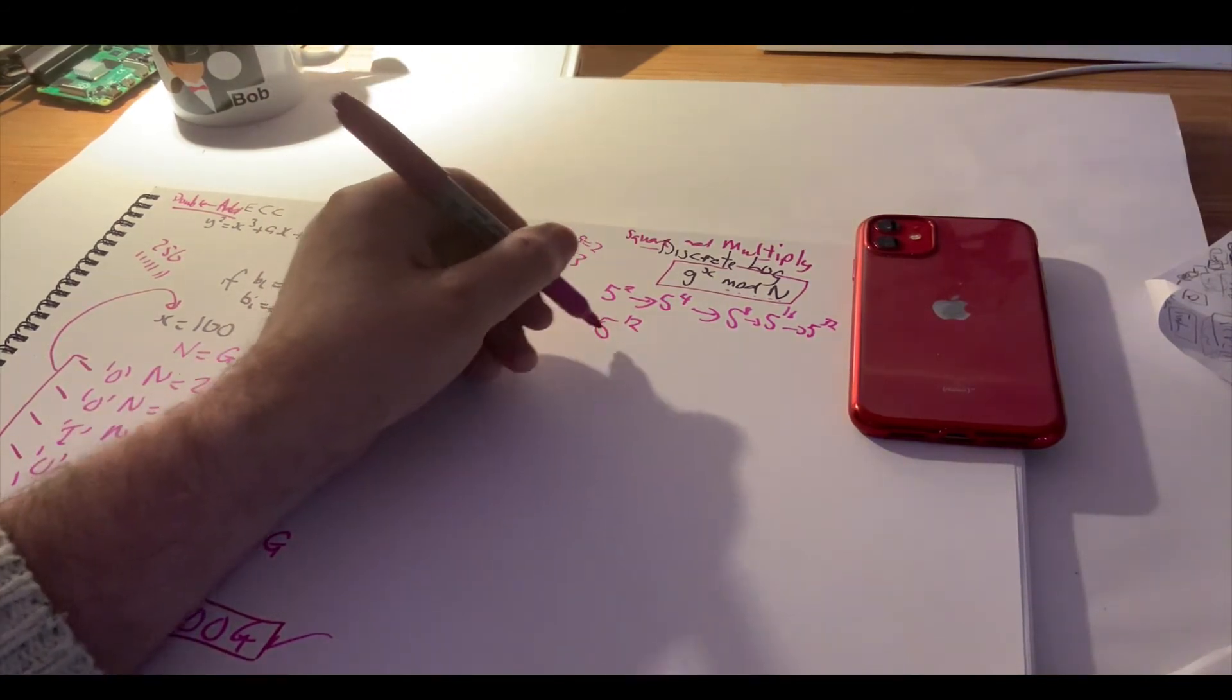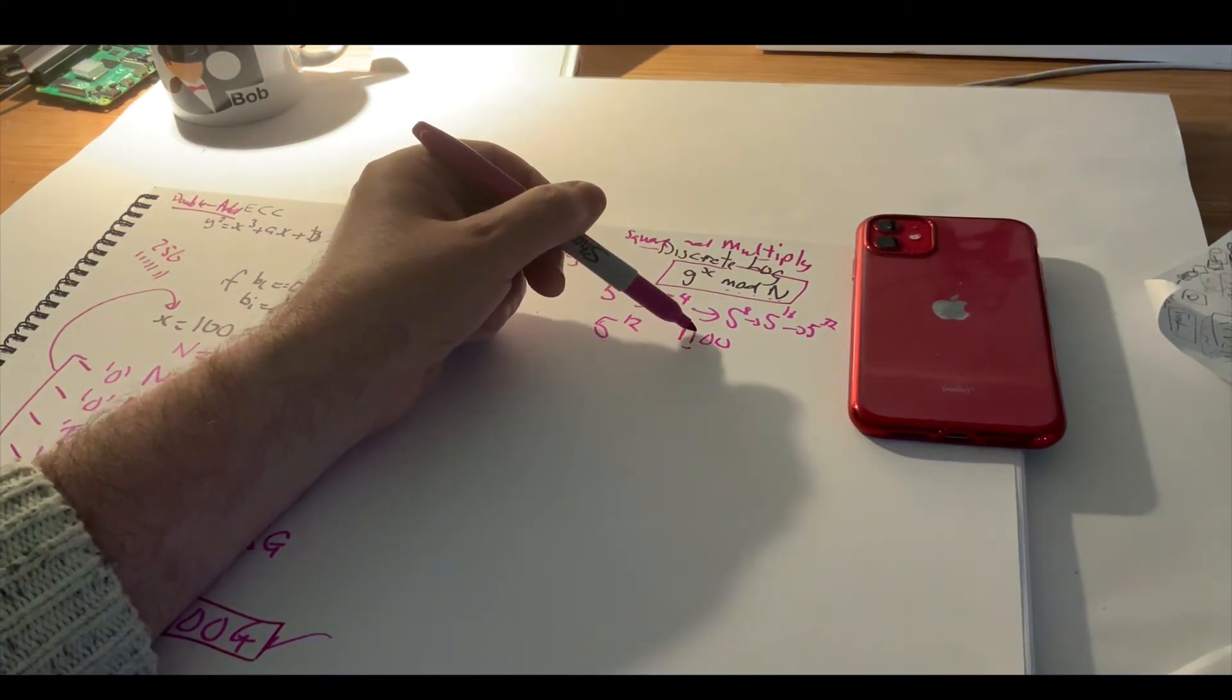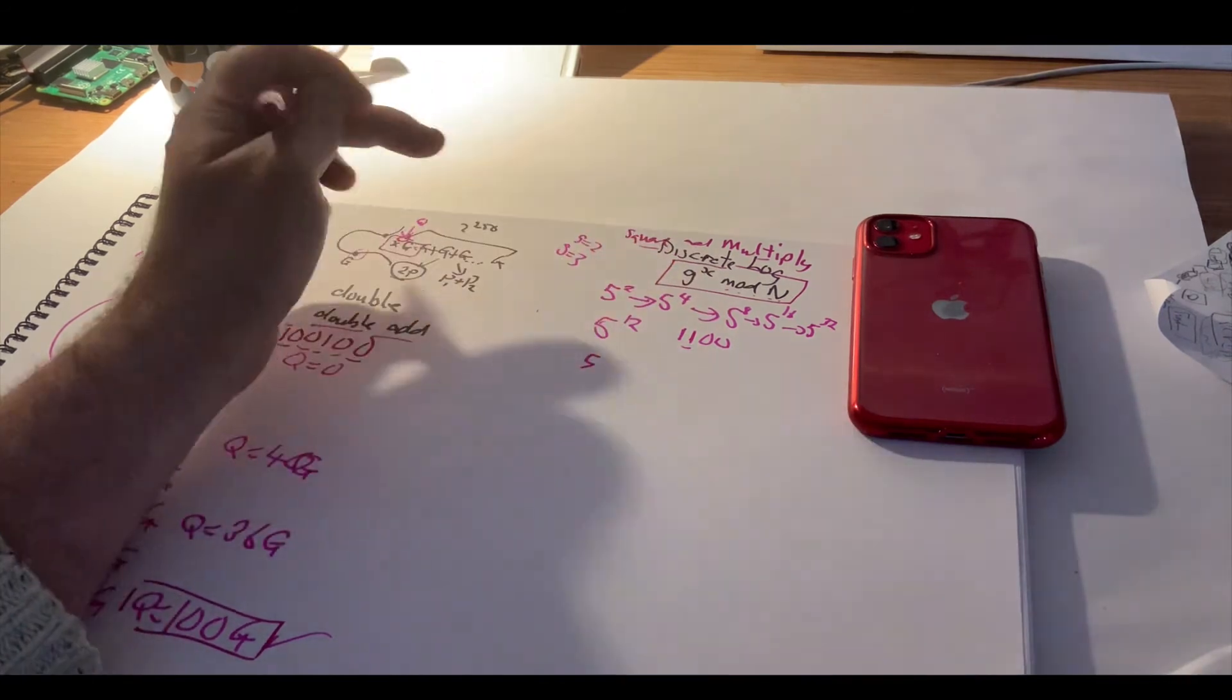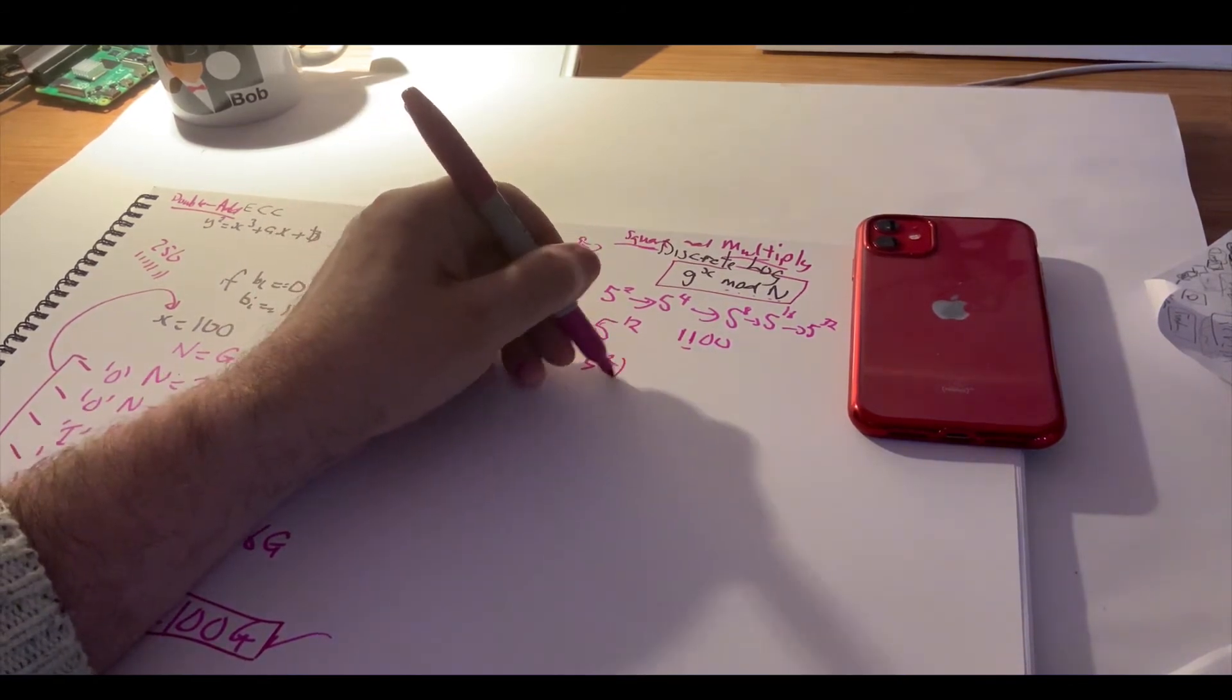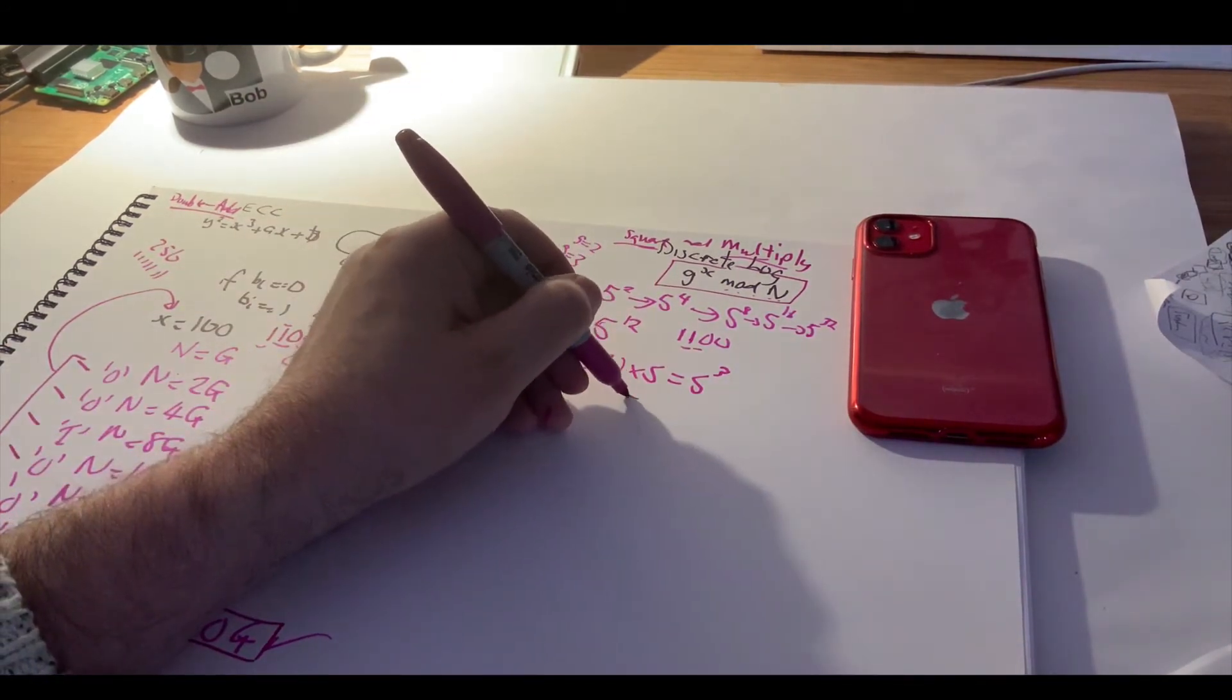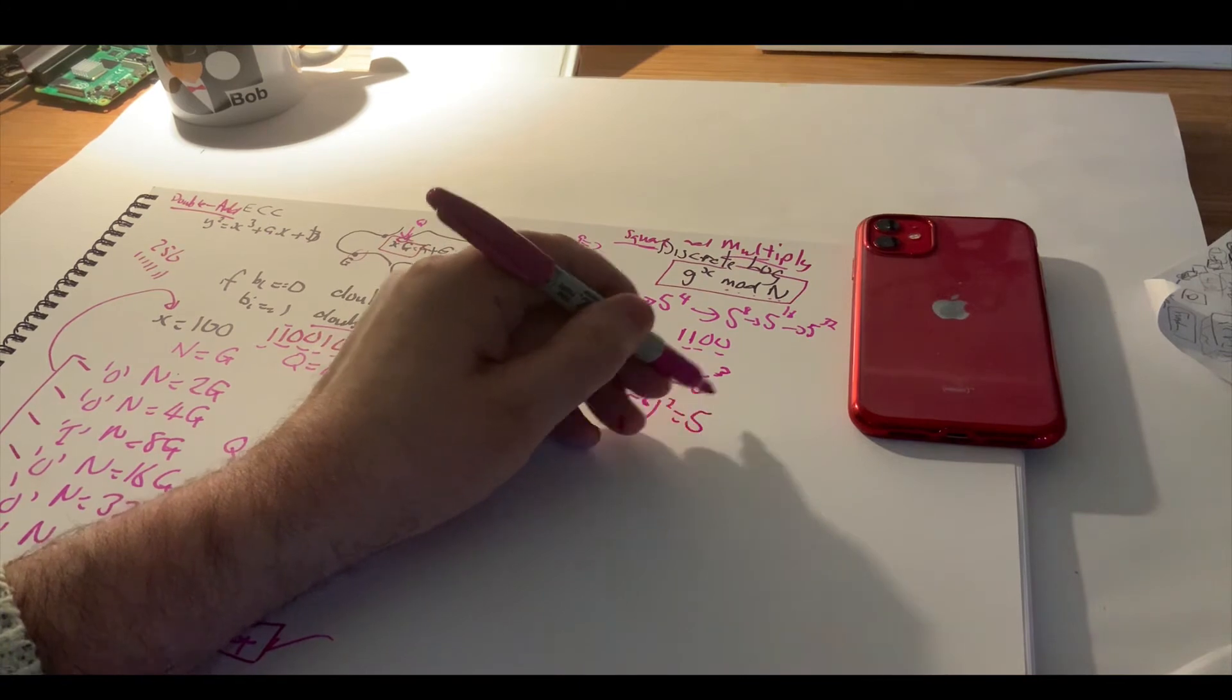So we want to compute 5 to the power of 12 in an efficient way. So we have 1, 1, 0, 0 in binary. So with this method, we start with the most significant bit and then we start from the 1 and then we'll move to the first bit. If the first bit is a 1, then we perform a square and then a multiply. So the square will be squared like that and then we will multiply to give us 5 to the power of 3. The next bit is a 0, so we will square that value to take us to 5 to the power of 6. And then the next bit is a 0. So again, we'll square and we get 5 to the power of 12.